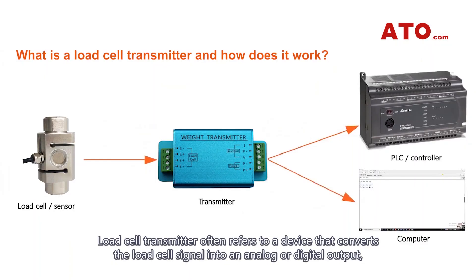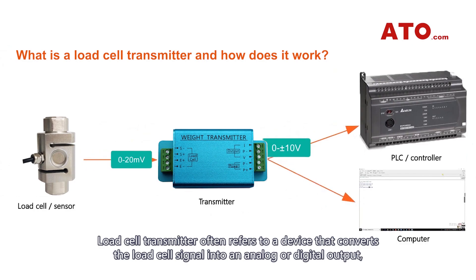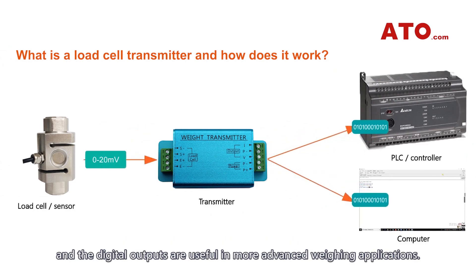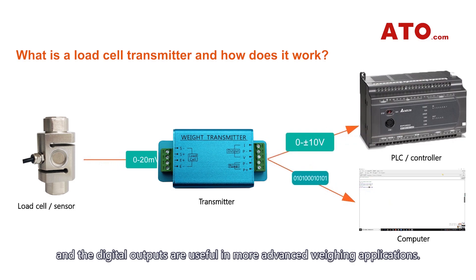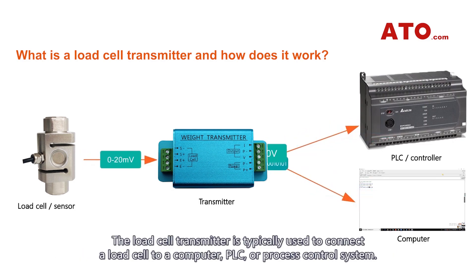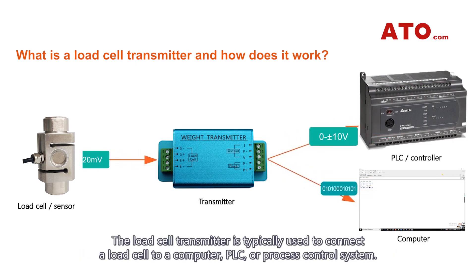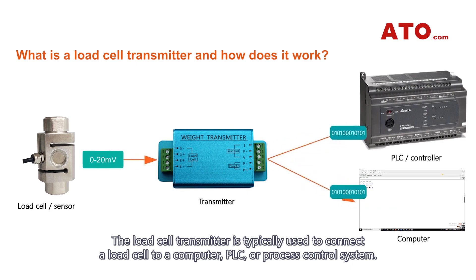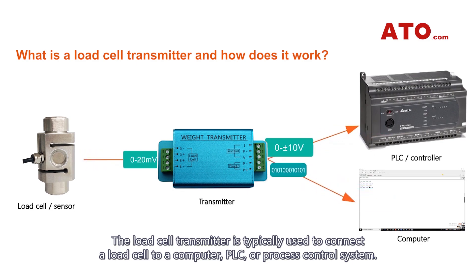A load cell transmitter often refers to a device that converts the load cell signal into an analog or digital output. The digital outputs are useful in more advanced weighing applications. The load cell transmitter is typically used to connect a load cell to a computer, PLC, or process control system.